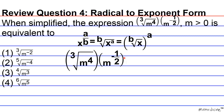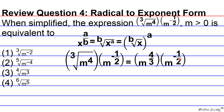Applying this rule to our expression: the cubed root of m to the 4 becomes m raised to 4 over 3 — 4 being the exponent of the radicand and 3 being the index of the root — times m raised to the negative 1 over 2. We don't need to take the reciprocal of the second term just yet.